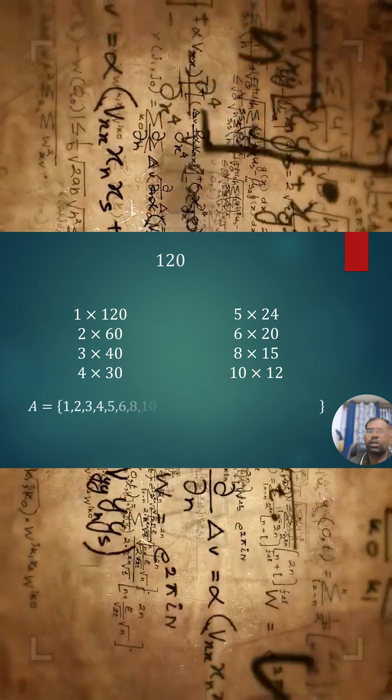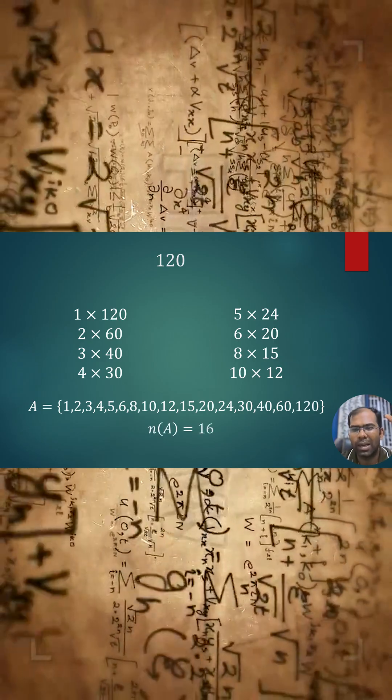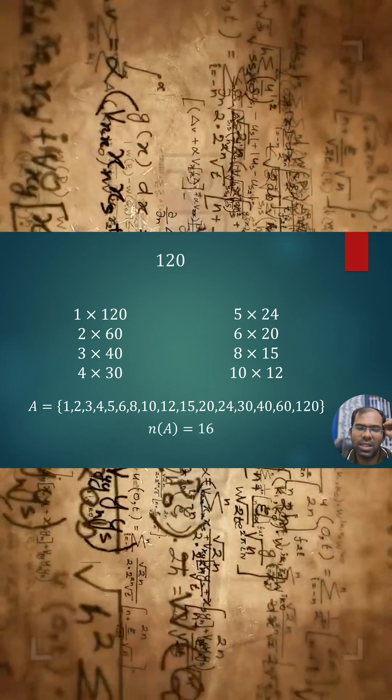Let's list all the divisors: 1, 2, 3, 4, 5, 6, 8, 10, 12, 15, 20, 24, 30, 40, 60, 120. That constitutes 16 numbers.